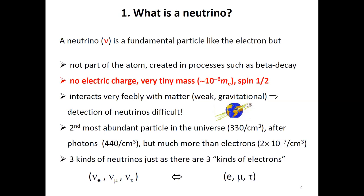There are three kinds of neutrinos as far as we know: the electron type, muon type, and tau type. They have their partners among the charged leptons — the electron, muon, and tau particles.